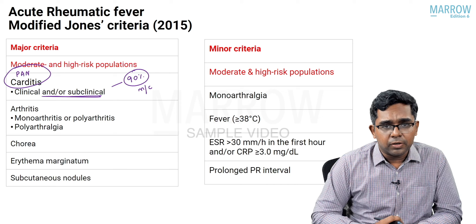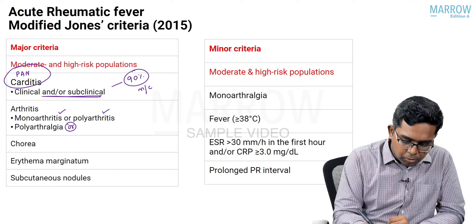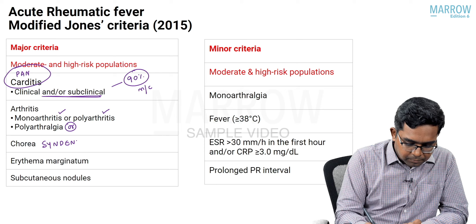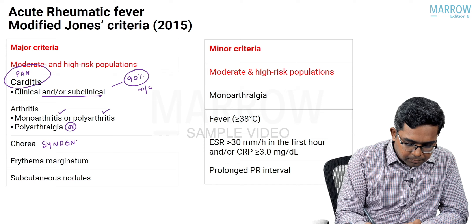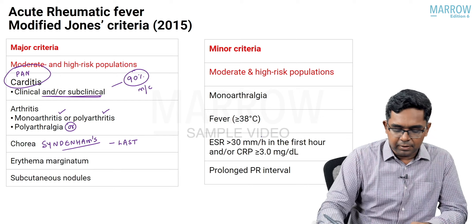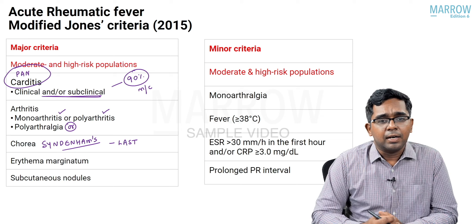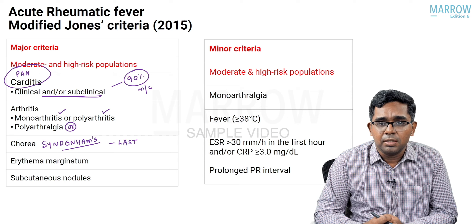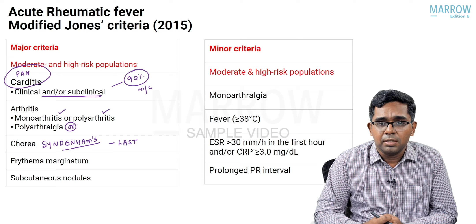Other major criteria include Sydenham's chorea, characterized by extrapyramidal movements, typically the last finding in a rheumatic fever case; erythema marginatum, characterized by redness more at the margins; and subcutaneous nodules, commonly noted on the extensor aspect of the elbows. These five are the major criteria of acute rheumatic fever.